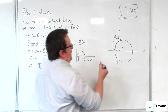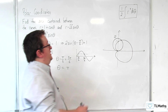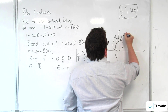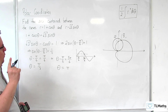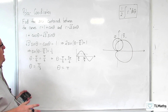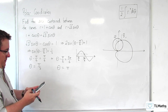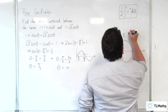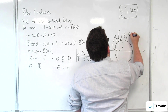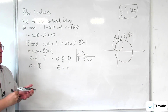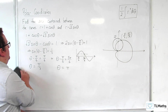Theta equals pi corresponds to the origin point, so we're not interested in that one. The relevant intersection is at theta equals pi over 3. Substituting back in: 1 plus cosine of pi over 3 equals 3 halves, so our polar coordinate of intersection is (3/2, pi/3).